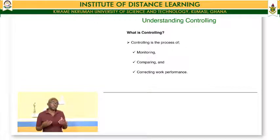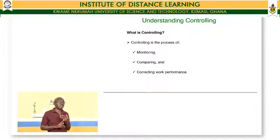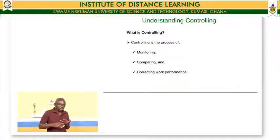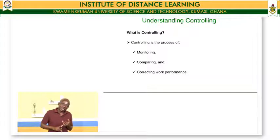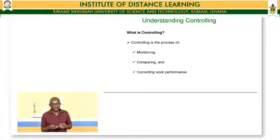So what is controlling? When we control, we try to monitor, we try to compare, and then to correct work performance. We try to monitor to ensure that what is being done is the right thing. We try to compare to ensure that what we want to do is what we are doing. And then we try to correct — if we identify, based on the comparison we are making, that it's not what we want to do, we try to correct the wrongs that have been done.